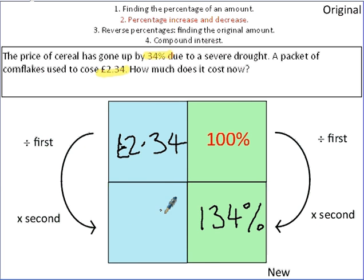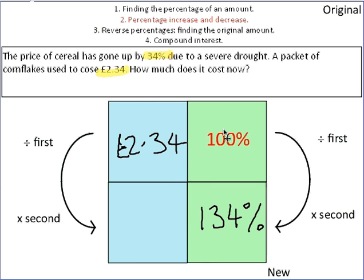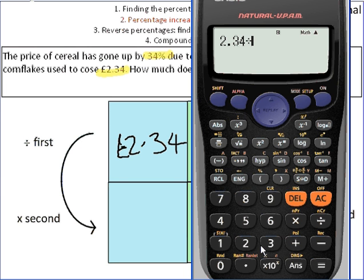So let's have a look at how much it costs now. As you can see, these questions are really similar to the ones before finding percentage of an amount. They're just worded a bit differently. So we've got £2.34. I'm going to put that in the calculator to begin with so we know where we are. Then I'm going to go back and look at my values. So I need to divide by 100 to find out what 1% is, and then times by 134.